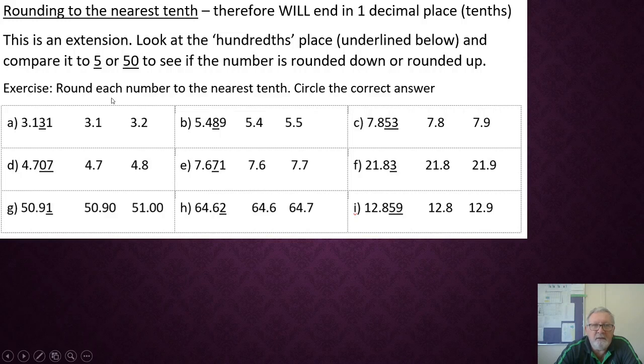So, round each of these numbers to the nearest tenths, but all you have to do this time is circle the correct answer. So, work out if three and one hundred and thirty-one thousandths is closer to three and one tenths, or three and two tenths. Again, think about this one, and compare it to five. Alright, pause the video and complete this task.